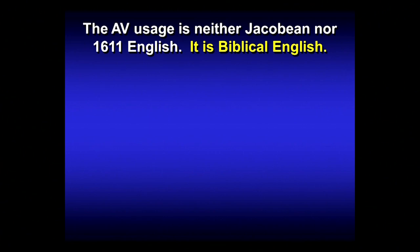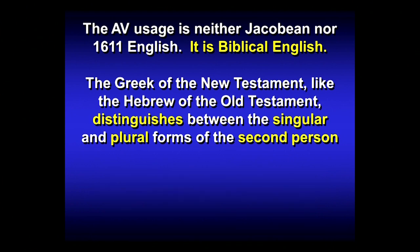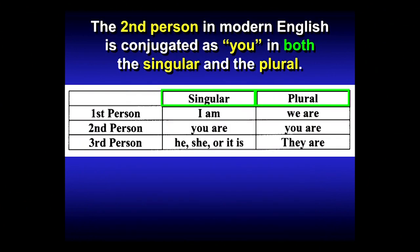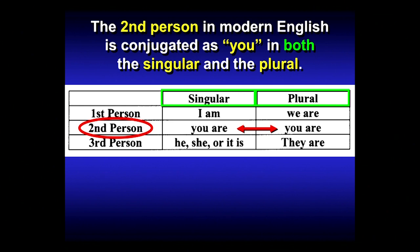What do we mean by that? The Greek in the New Testament, like the Hebrew of the Old Testament, distinguishes between the singular and plural forms of the second person. And the King James makes this distinction because the Greek text makes it — and it's the only way to correctly translate the Bible. The second person in modern English is conjugated as 'you' in both singular and plural. Over in Mississippi, Alabama, Tennessee, and Georgia, we solved the problem: 'you all.' There is no problem.